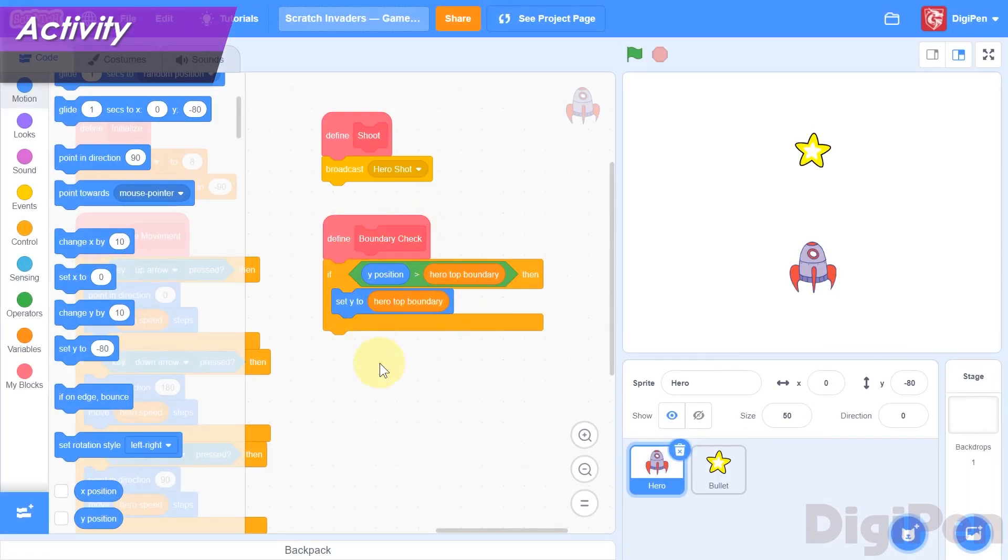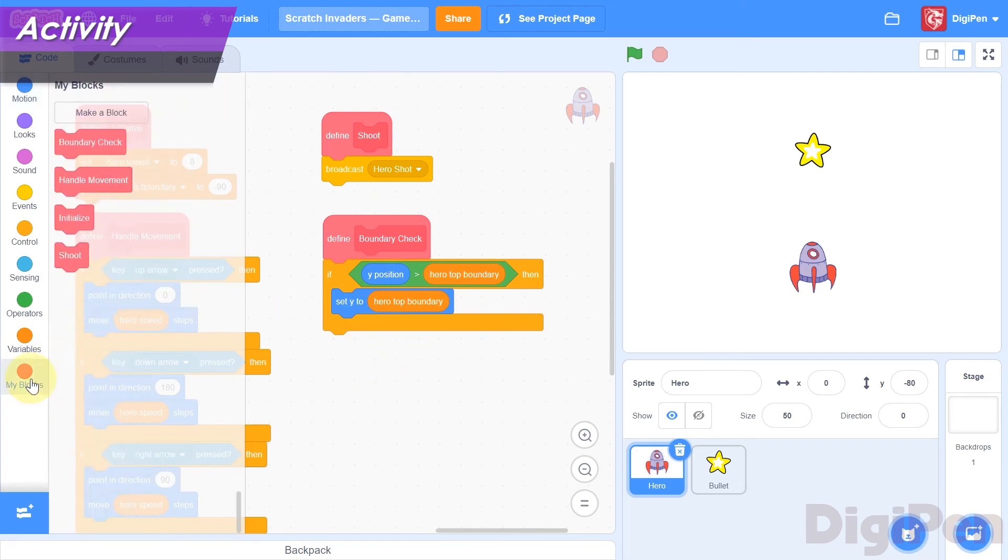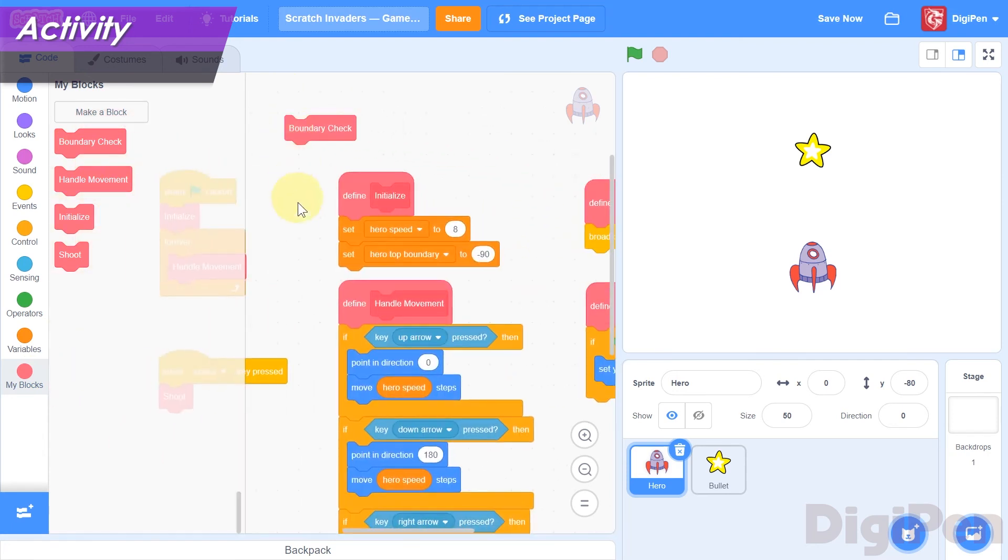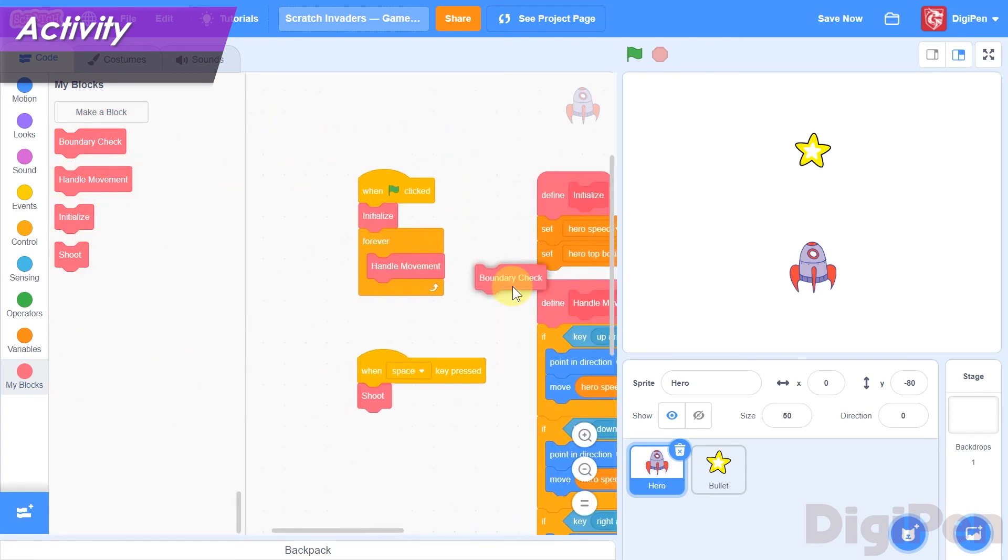Now we just need to call it. Click the pink My Blocks category. Drag the Boundary Check block into the code area, and attach it beneath the Handle Movement block, inside the mouth of the main Forever block, over here.